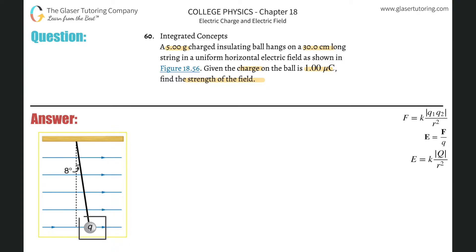Let's begin drawing the forces acting on the ball. Since the ball is an insulating ball with mass, gravity is acting on it — we're assuming this is on Earth. So there's a downward force on the ball, which we'll call F_g, the force due to gravity. There is also an electric force on this ball.